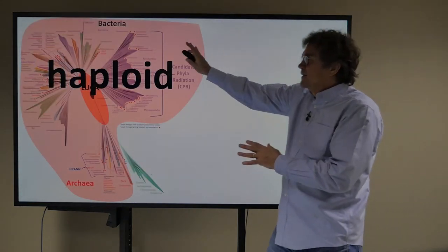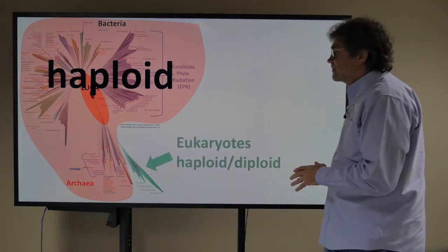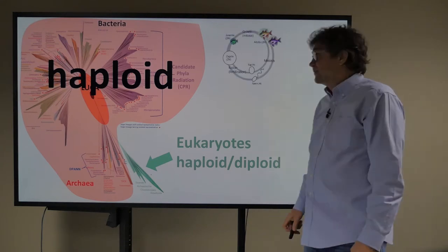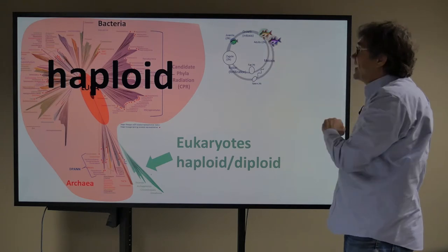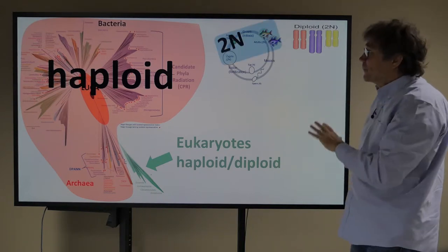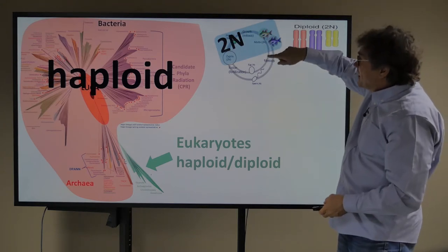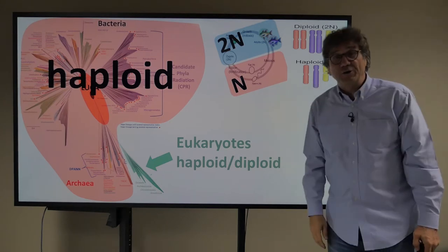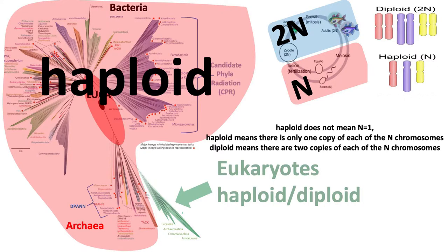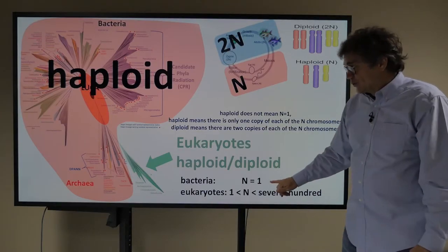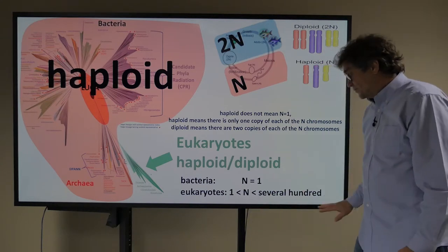These prokaryotic cells are what's called haploid. Eukaryotes are haploid and diploid. My body is a diploid body and the gonads are haploid sperm. Here we have a life cycle of a fish with three chromosomes — two of each, so six altogether. That's called 2N. The fish also produce eggs and sperm that are N, not 2N, meaning one copy of each chromosome. Haploid means one copy of each of the N chromosomes; diploid means two copies. In bacteria N equals 1, and in eukaryotes N can equal one, two, three, or sometimes up to several hundred.